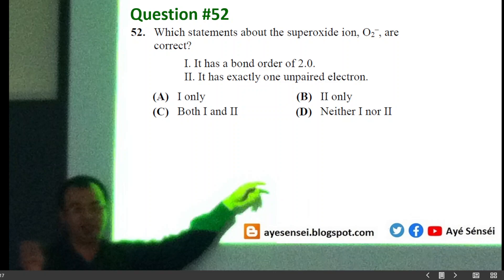Alright, question 52: which statement is true about superoxides? The bond structure of superoxides can be drawn like this. So basically they have electron pairs except this, so it has exactly one unpaired electron. Statement two is correct, and then it has a bond order of two. So statement one is wrong, so the answer is B.